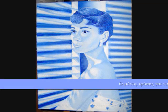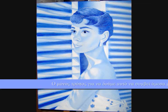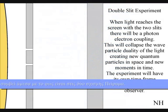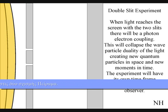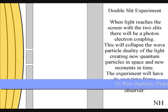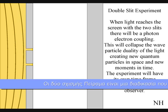The only way to see this happen directly by light is in a two-slit experiment. When the waves reach the screen with the two slits, they will react with the electrons of the screen. This will collapse the wave-particle duality of the light, creating new quantum particles in space and new moments in time.